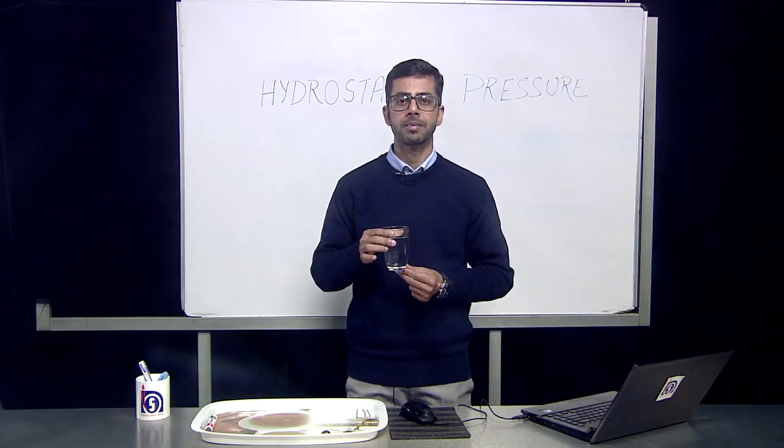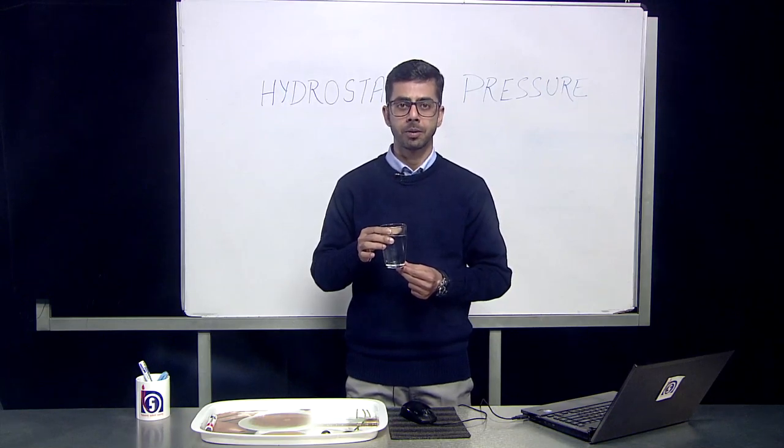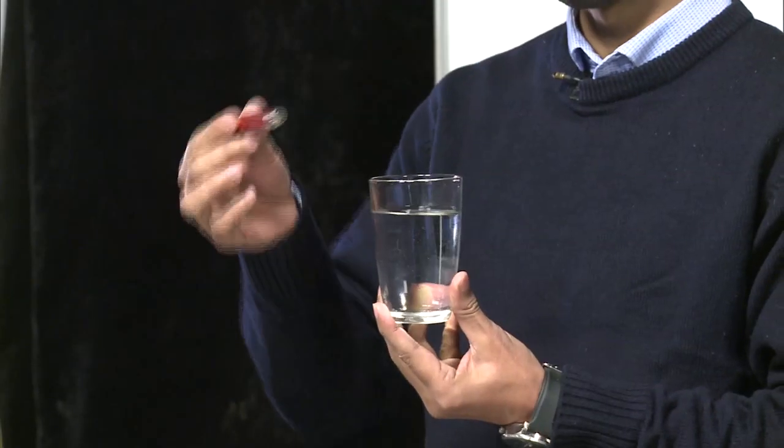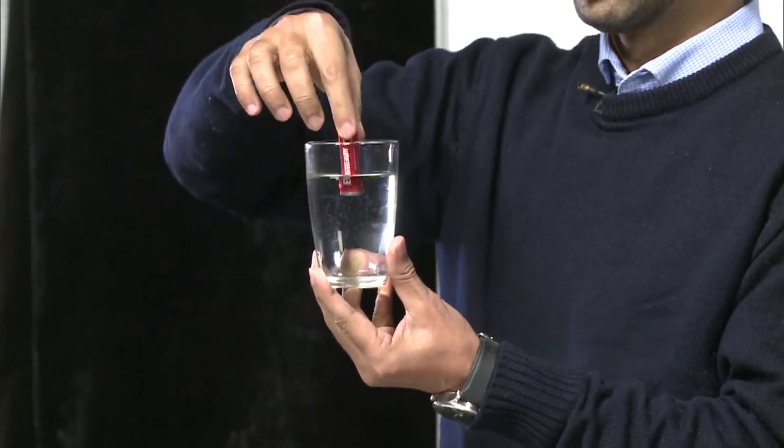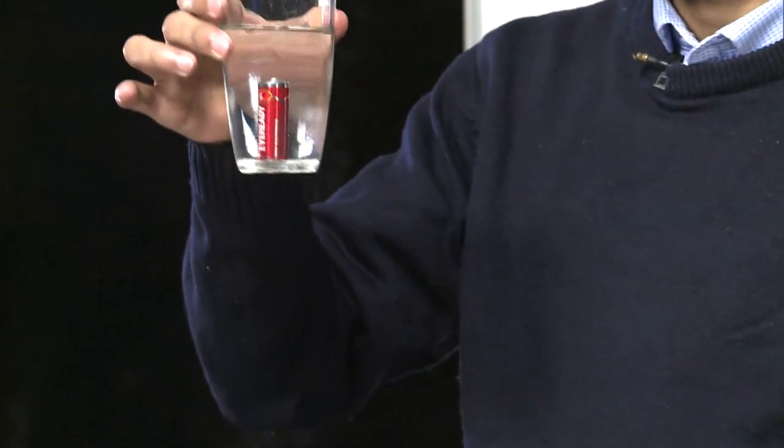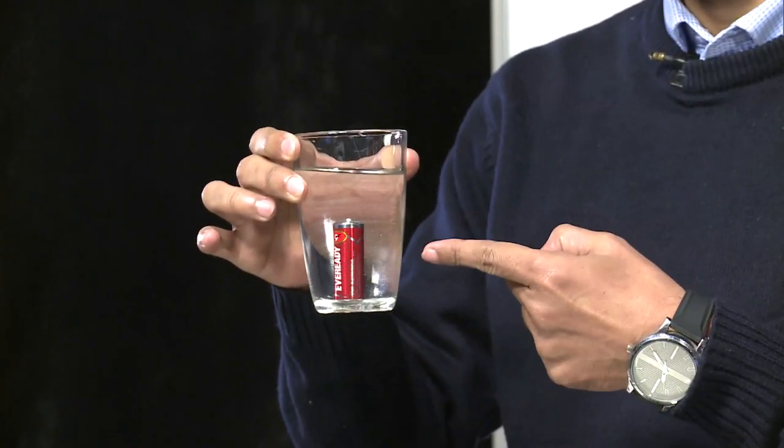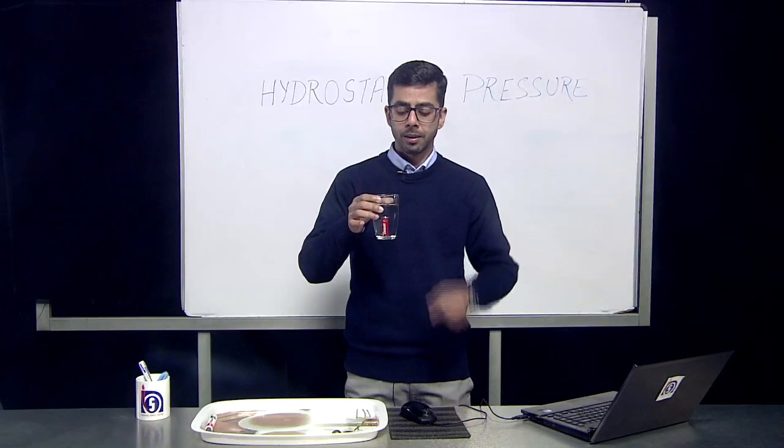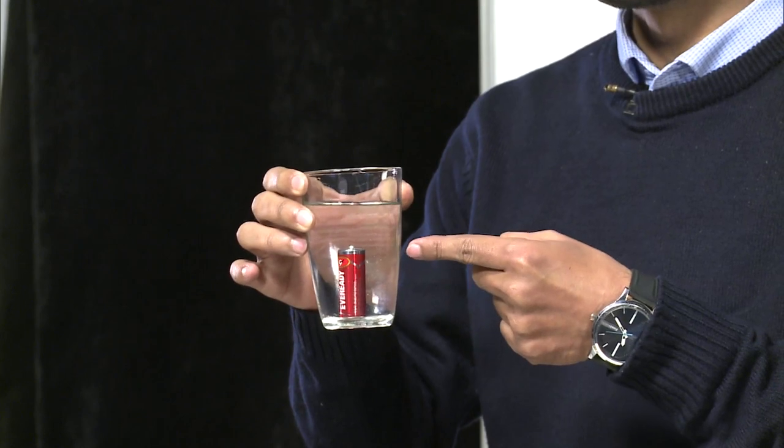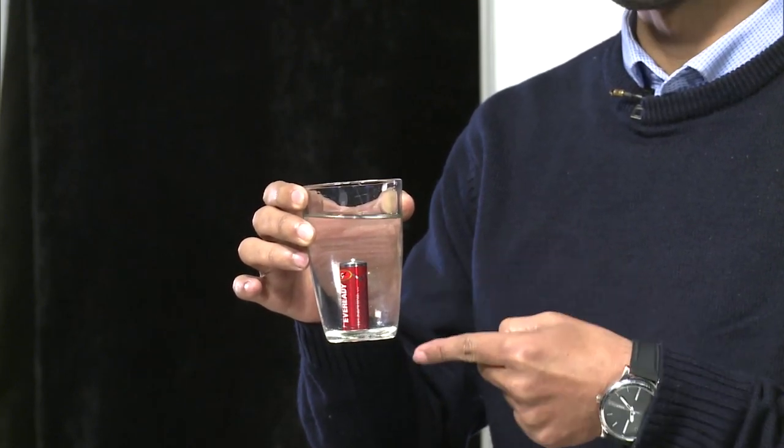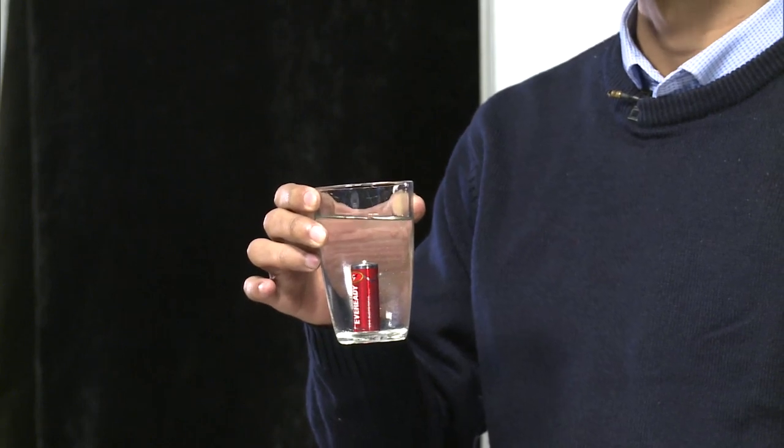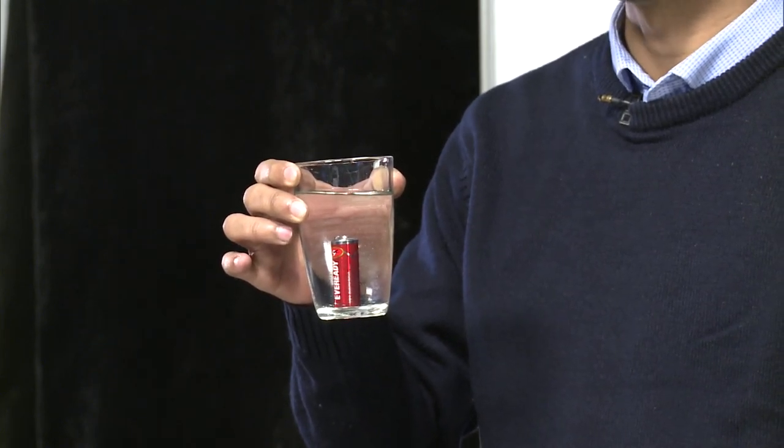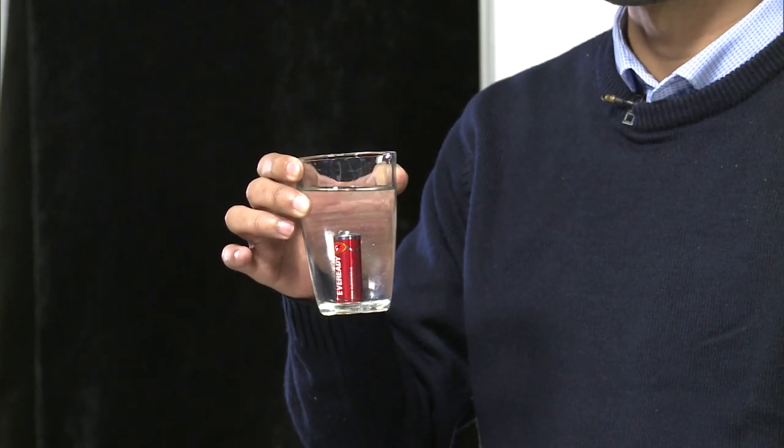Now, we can demonstrate the same example that has been denoted by the diagram by using a glass filled with water till a certain level. When I release this cell on the surface of the water which is at rest in the glass, it will dip till the bottom of the jar. Now, you can see the cell is not moving anywhere and through this, we can analyze that the water which is at rest is applying the force at every side, at every surface of this particular shape.